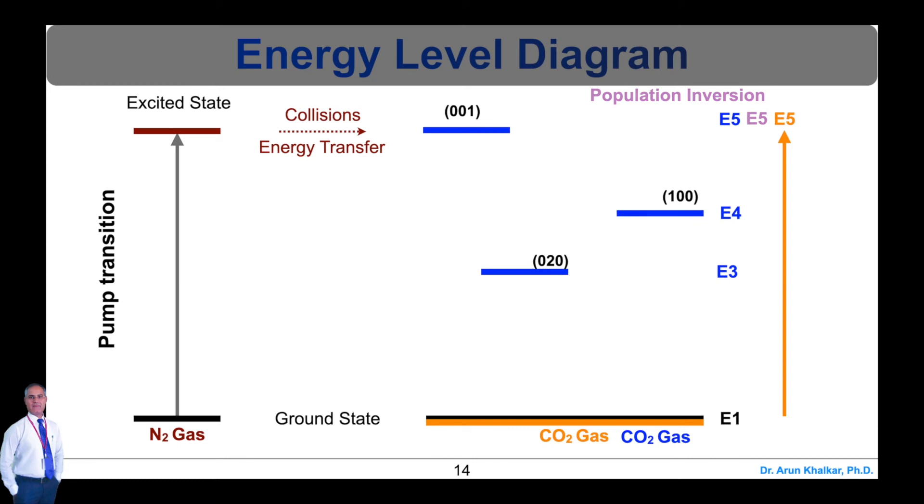The photons bounce back and forth between the end mirrors causing more and more stimulated emission during each passage. The strength of stimulated photons traveling along the axis of the optical cavity (that is the discharge tube) builds up rapidly, while the photons traveling at angles to the axis are lost.